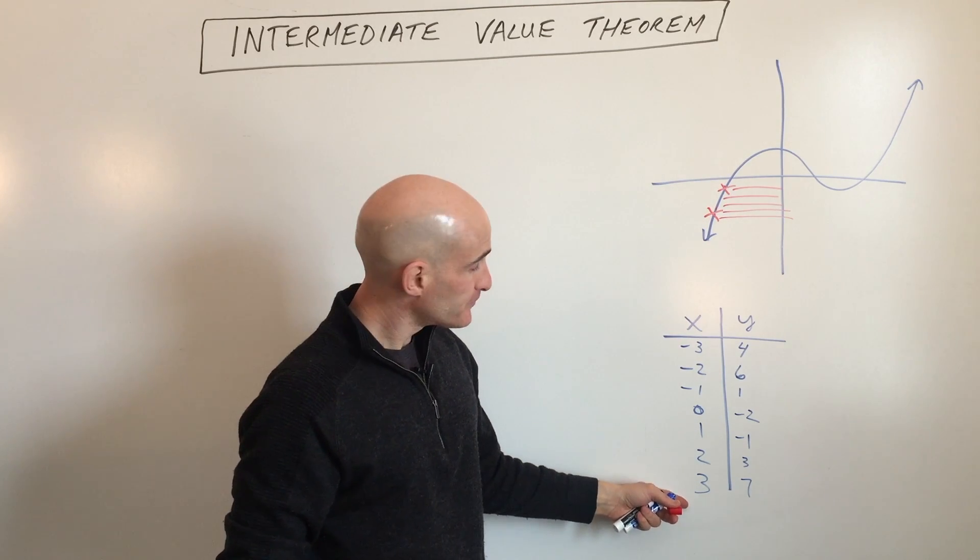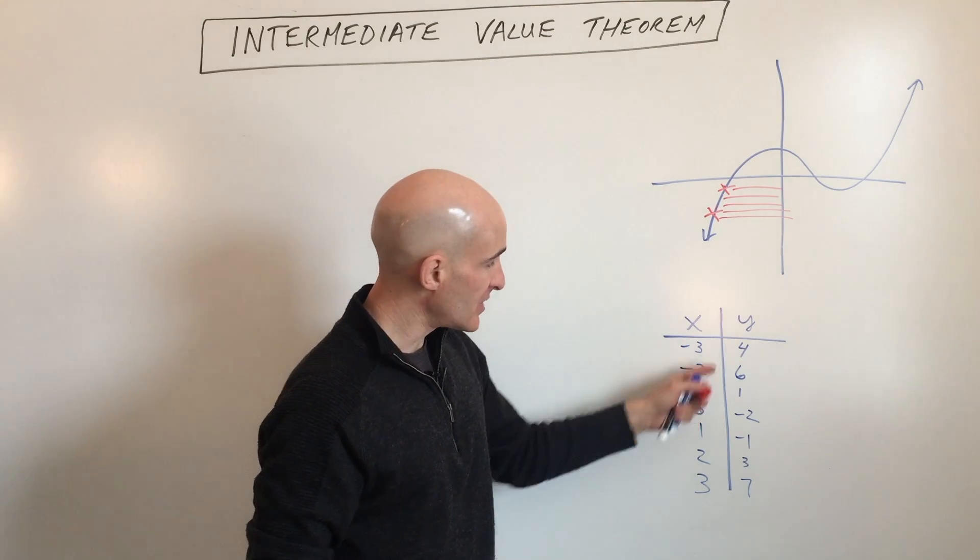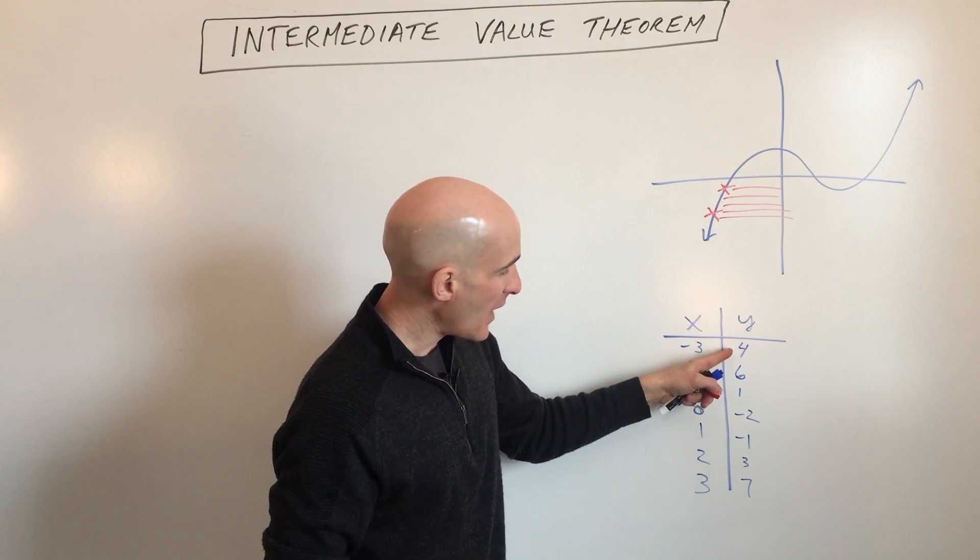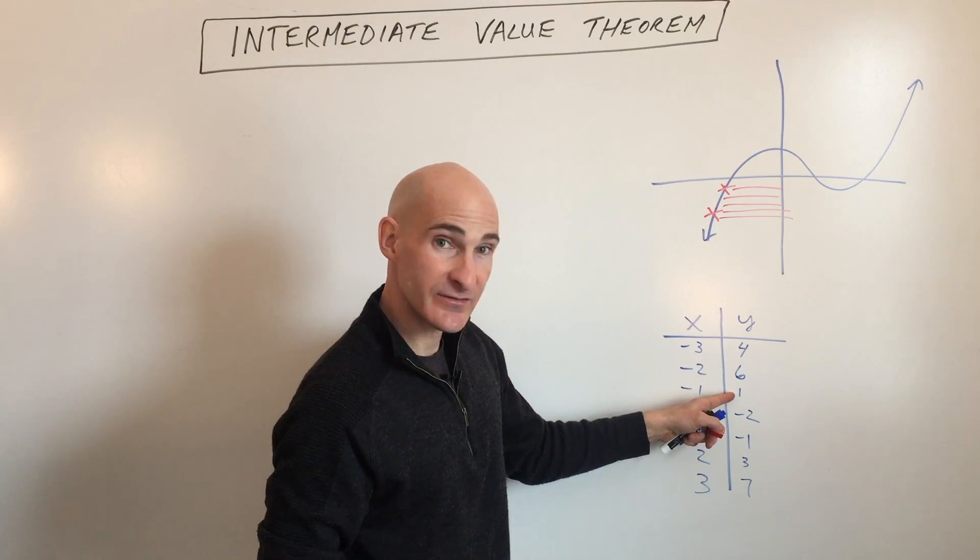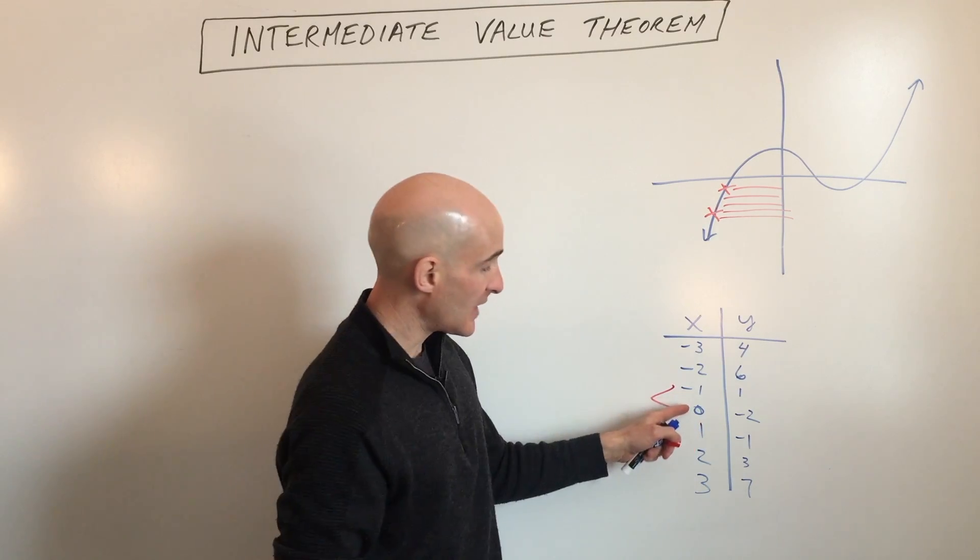Say we're given a table like so. Notice here's some X values, here's some Y values. Notice the Y values: positive, positive, positive, negative. So what happened here between negative one and zero?